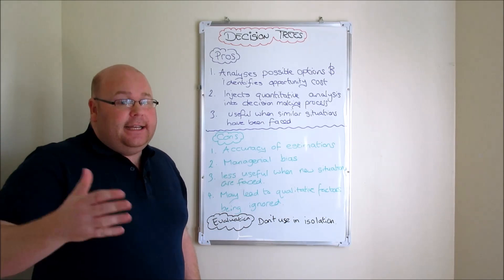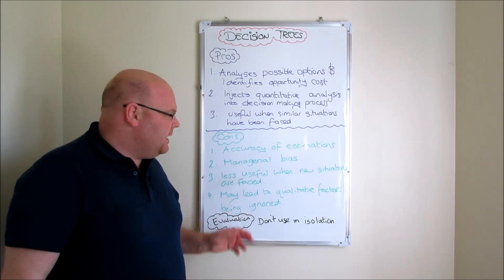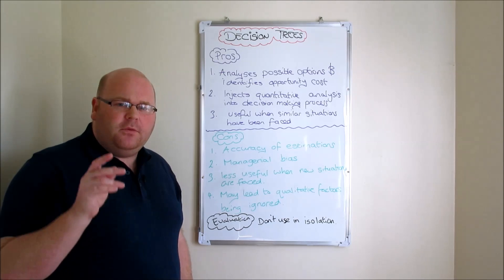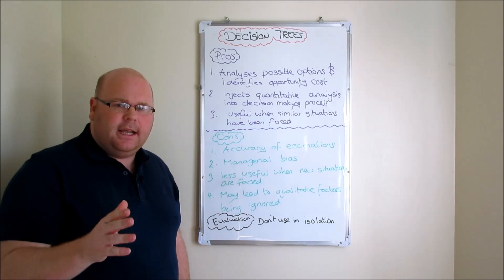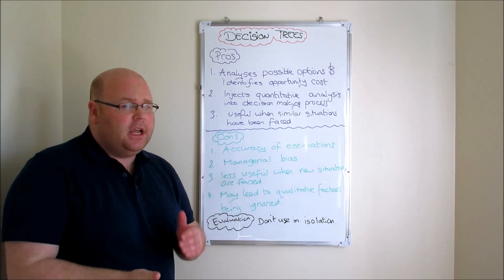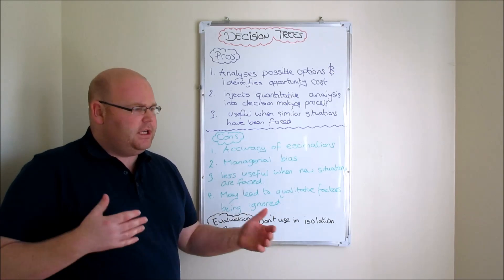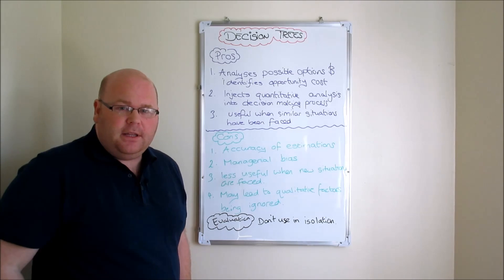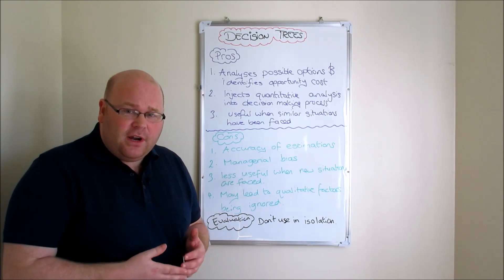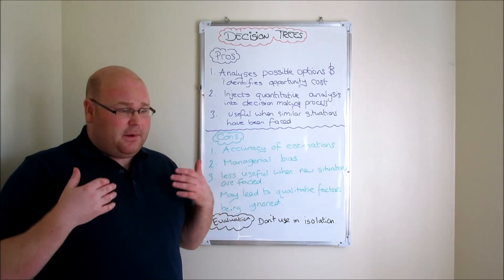Number two is an absolute beauty criticism of decision trees - they can be prone to managerial bias. So who's coming up with these estimates and these values that we're placing in decision trees? Could well be it's different managers who are pitching each of the different alternative decisions to senior people in the organization. Now if I'm pitching an idea, it's in my interests for that idea to be accepted. If that idea is accepted and it goes well, I'm going to be remembered as the person who brought that idea to the organization, bought those potential profits to the organization.